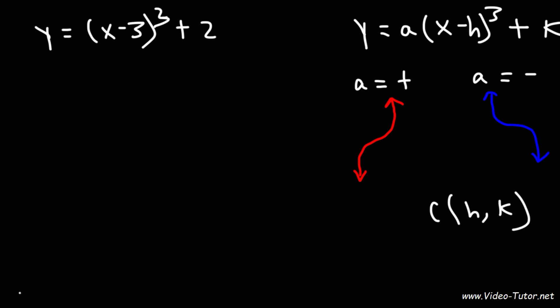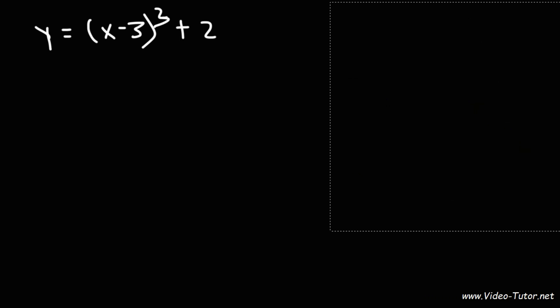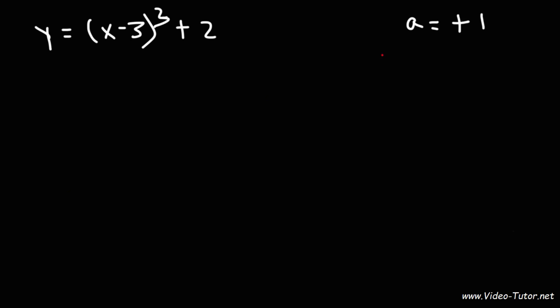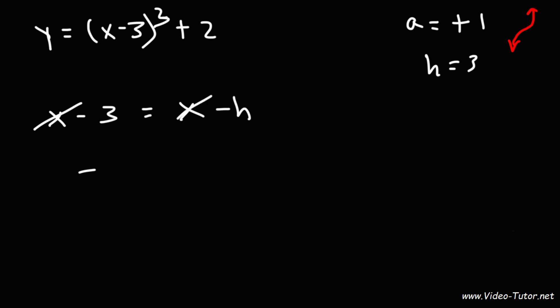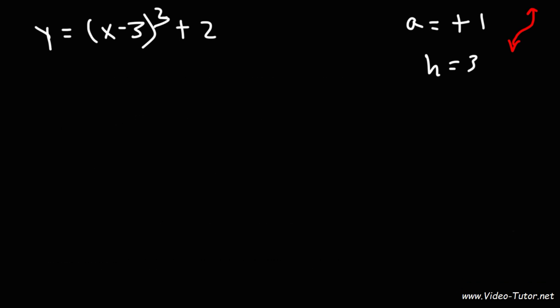So in this example — y equals (x minus 3) cubed plus 2 — we can see that a is positive 1, so it's an increasing cubic function. H is 3: even though we see x minus 3, if you set that equal to x minus h, x cancels and you get h is positive 3. That negative sign can really confuse you if you're not careful. K is positive 2. Because h is positive 3, the graph shifts 3 units to the right; k is positive 2 shifts it up 2 units. So the center (h, k) is at (3, 2).